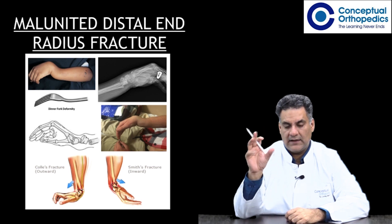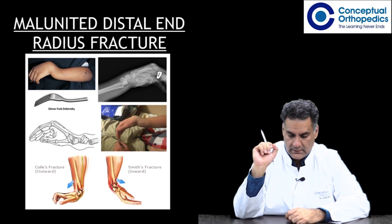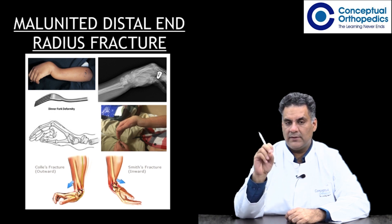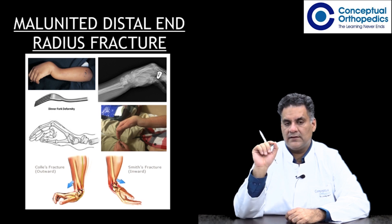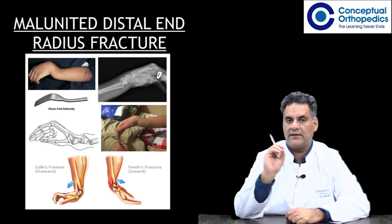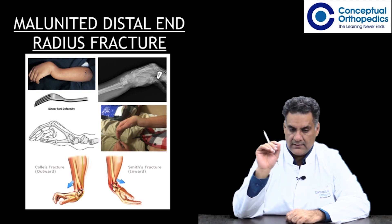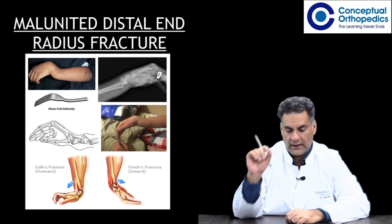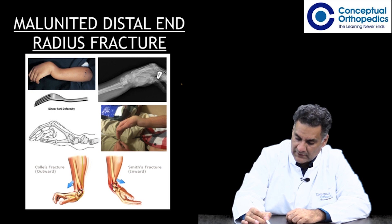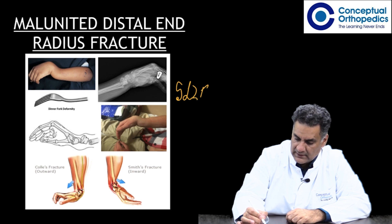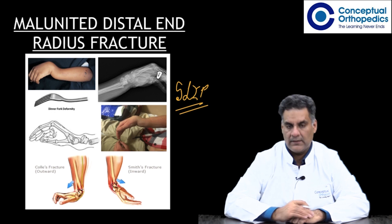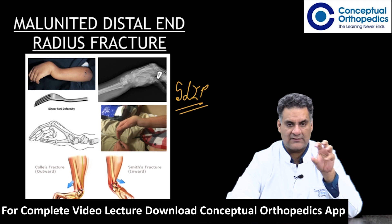In malunited distal radius fractures, one must understand the displacement. The usual displacement in an extra-articular distal radius fracture is posterior, dorsal, and lateral. The distal fragment is typically supinated, laterally displaced, impacted, and posteriorly displaced. These four things are summarized by the mnemonic SLIP.